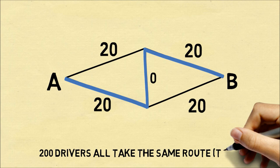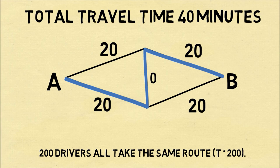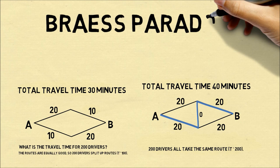And therefore, the total travel time will be 40 minutes to get from A to B. And this is the Braess Paradox illustrated. Before we had the free road, the travel time was 30 minutes,